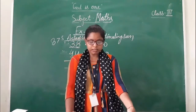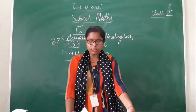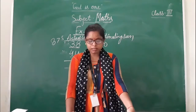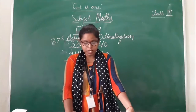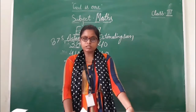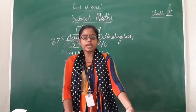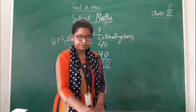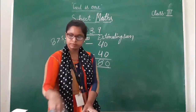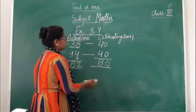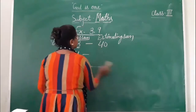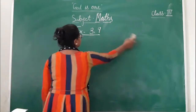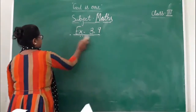In exercise 3.9, estimate each sum by rounding off the number to the nearest 10. First, we have to estimate numbers to the nearest 10. Also, find their actual sum. Then we have to find the actual sum.